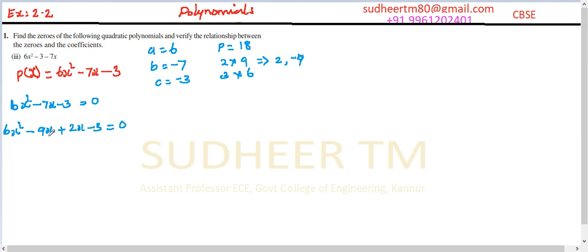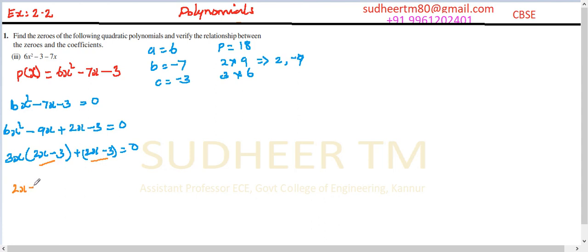We write it as 6x squared minus 9x plus 2x minus 3 equals 0. Here, 3 is common in 6 and 9, and x is common, so we take 3x outside. What remains is 2x minus 3. Then plus 1 times 2x minus 3, so we get 2x minus 3 common on both sides.